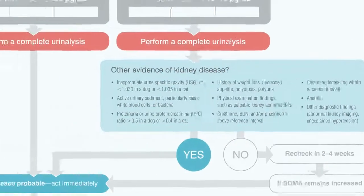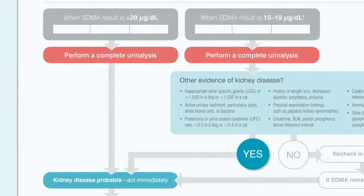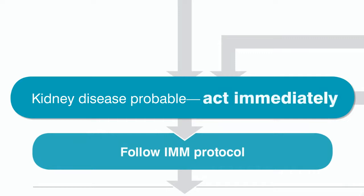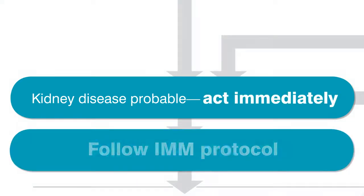If additional evidence is found, or the SDMA result is 20 or greater, kidney disease is probable and immediate action using the IMM protocol is necessary.